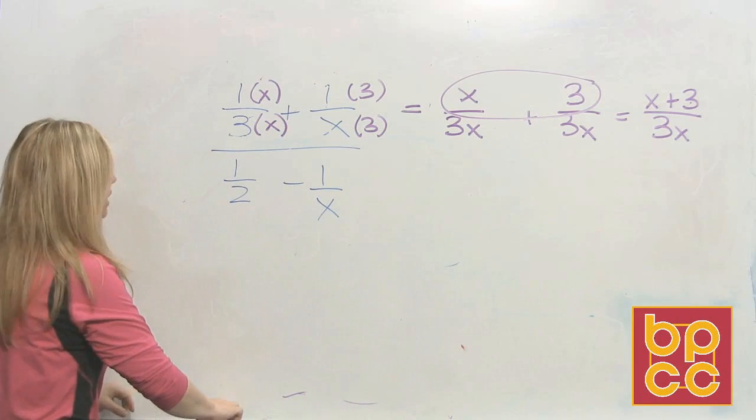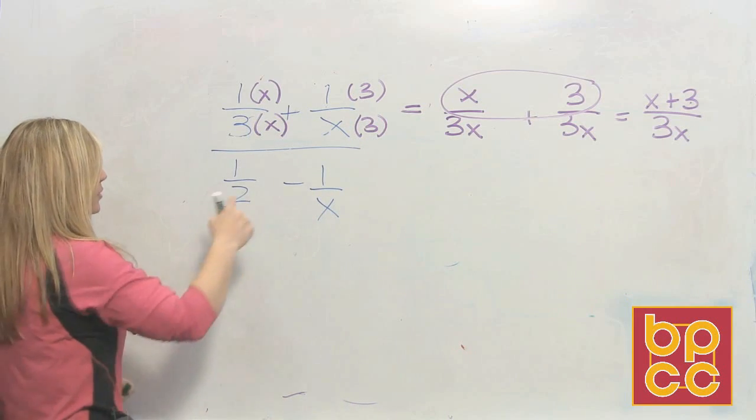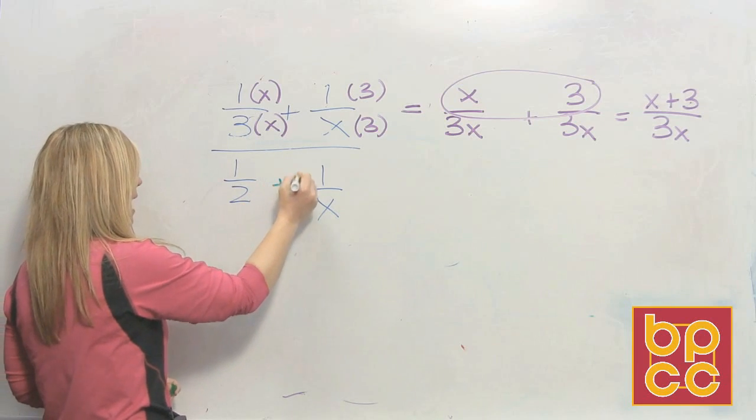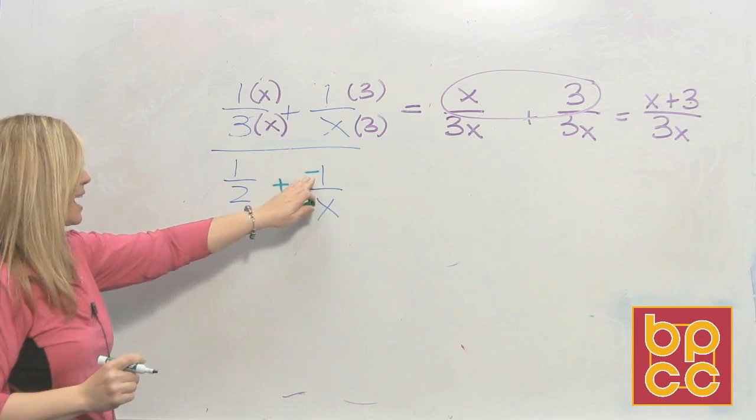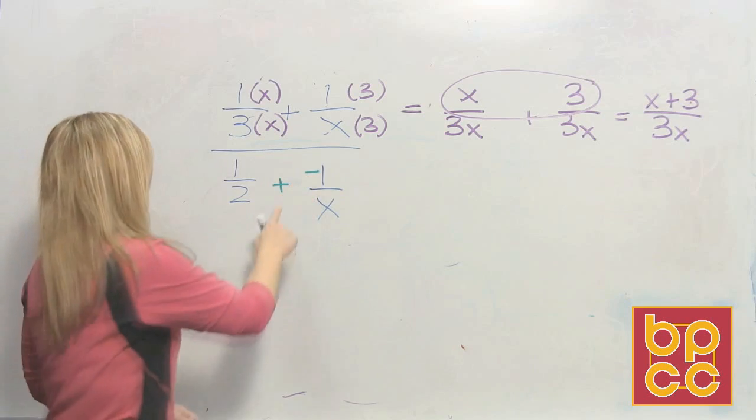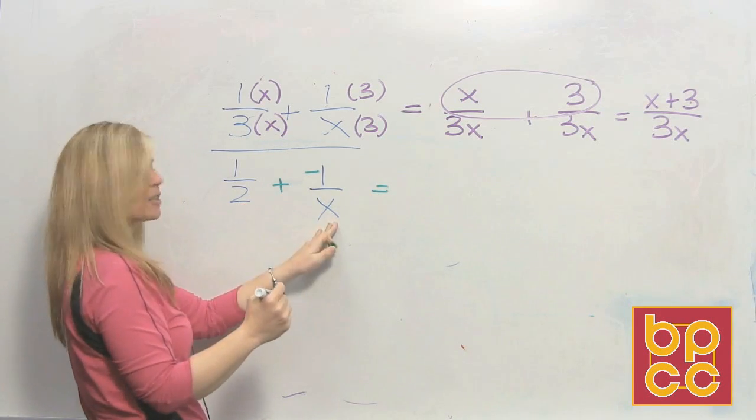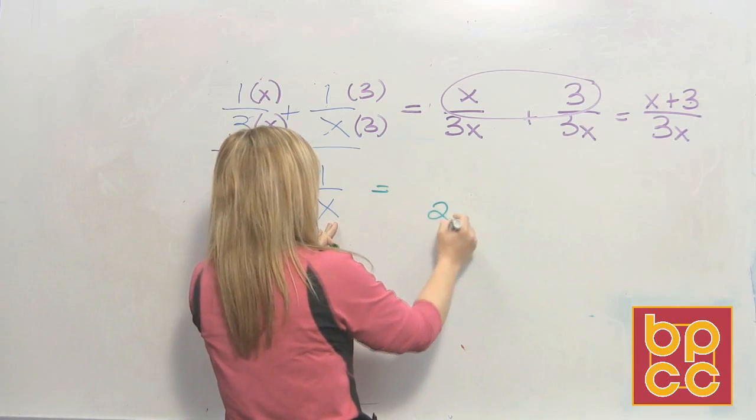So now we're going to look at the denominator. We've got the same problem. This says subtract. We've discussed this. Subtract means to add the opposite. Get the negative sign where it belongs in the numerator. Adding means we need an LCD. 2 is prime. x is prime. So the LCD's got to be 2x.